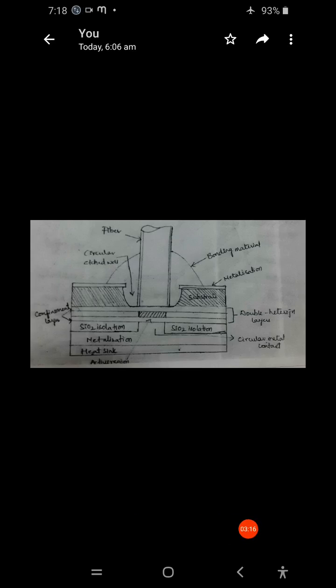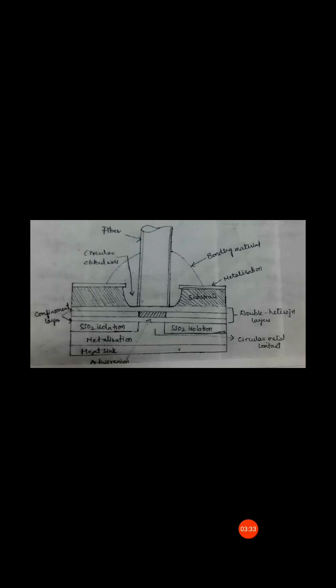In the surface emitting LED, the internal absorption is less and the reflection coefficient is high. Because of this, the forward radiance — that is, the brightness — is high.